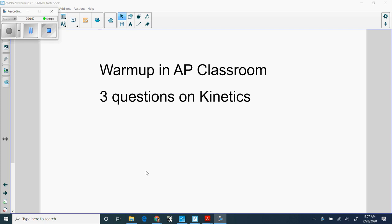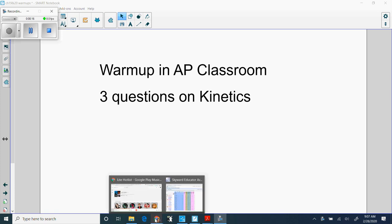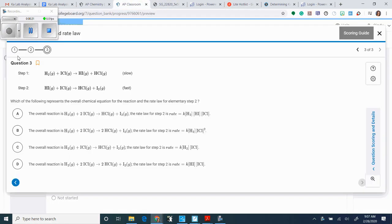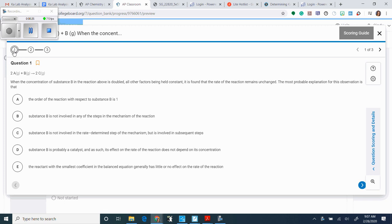Your warm-up is in the AP Classroom. When you open it, it's just dated to 28-20. It's just three questions on kinetics. They're multiple choice, so you should not be using your calculator. You need to read the words carefully so you can answer them. So it's just these three questions. Submit it when you're done so I can see how you do on that. Do that first.